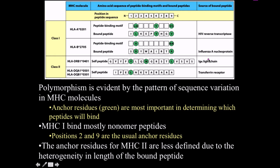Examples of bound peptides include HIV reverse transcriptase, influenza A nucleoprotein, Ig-kappa light chain, and transferrin receptor — the latter two being self-peptides. MHC class 1 mostly binds nonamer peptides, with positions 2 and 9 as anchor residues. For MHC class 2, peptides can be up to 20–25 amino acids long, and the anchor residues are less defined due to the heterogeneity and length of the bound peptide.